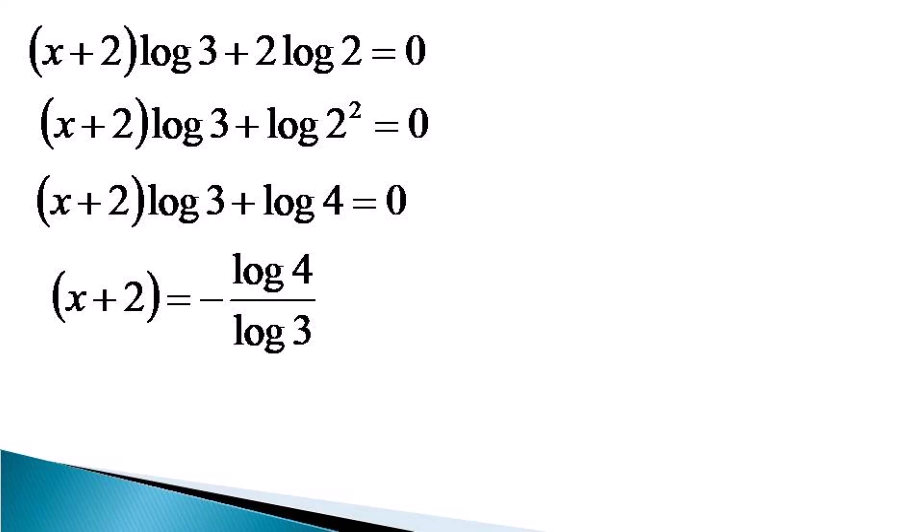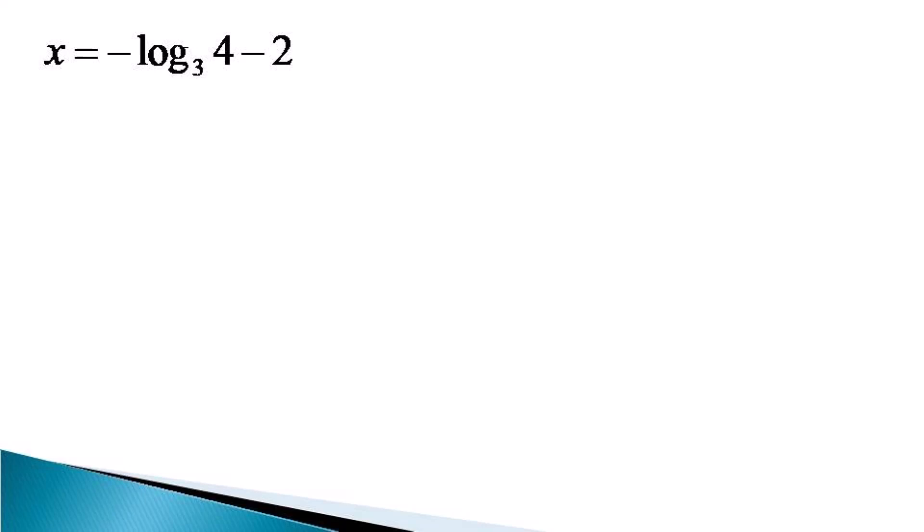Then x plus 2 is represented as equal to minus log 4 over log 3. Here we use the change of base formula, so x plus 2 becomes equal to minus log 4 to the base 3, or x equals minus log 4 to the base 3 minus 2. Mathematically, this is the correct solution, but for the sake of some mathematical beauty we can manipulate it further.